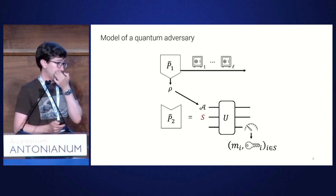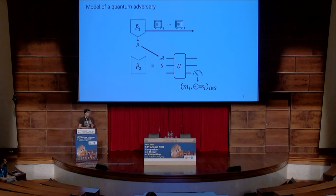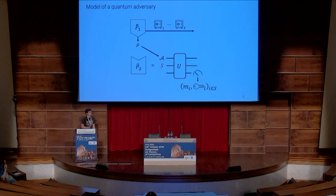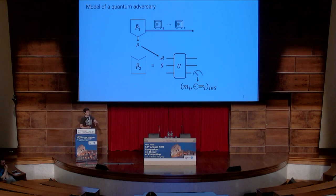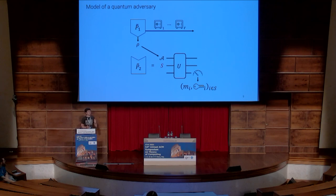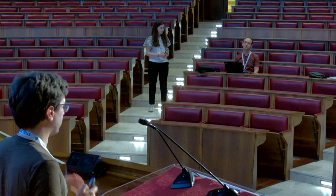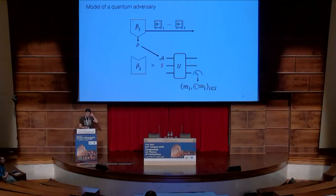A clarifying question from the audience: are the registers in tensor product? The mixed state row is the interesting register — the ancilla is a zero register and the other registers are classical, so yes, they're introduced as classical registers and the only interesting register is A.